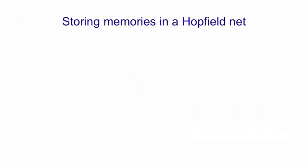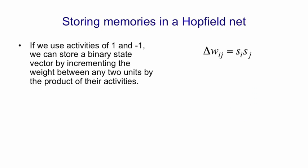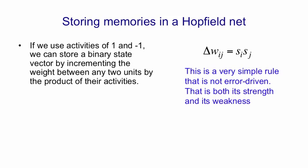The storage rule for memories in a Hopfield net is very simple. The idea is, if we use activities of 1 and minus 1, that we can store a binary state vector by just incrementing the weights between any two units by the product of their activities. So it's a very simple rule shown on the right. One nice thing about this rule is that you just go through the data once and you're done. So it really is a genuine online rule. That's because it's not error-driven. You're not comparing what you would have predicted with what the right answer is, and then making small adjustments. The fact that it's not an error-correction rule is both its strength and its weakness. It means it can be online, but as we'll see later, it also means it's not a very efficient way to store things.